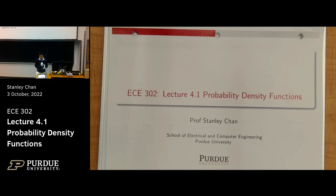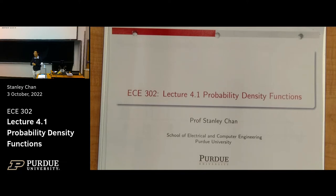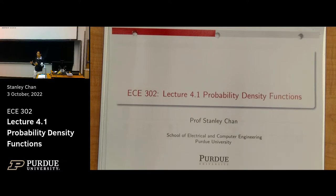We are heading to Chapter 4 on continuous random variables. This is going to be both interesting and boring. If you know discrete random variables well, it is a natural extension in a very simple way. It is also boring in the sense that the concepts are easy, but the calculations are tedious because you need to do integration and differentiation. As we progress to Chapter 5 on two random variables, you'll need to deal with double integration — not fun, although the concepts are pretty interesting.